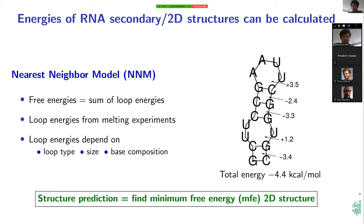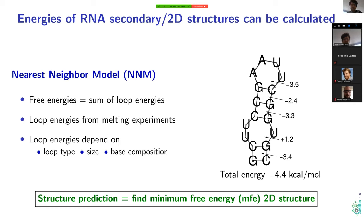The second ingredient that makes RNA special is that we have quite accurate energy models for secondary structure. There is the nearest-neighbor model, where we compose the total free energy of an RNA structure out of single energies of the individual components — specifically the loops in the structure. The energies of these loops can be determined experimentally through melting experiments, giving us a very accurate model where all the loop energies depend on loop size, loop type, and base composition, so we can tabulate all these single contributions.